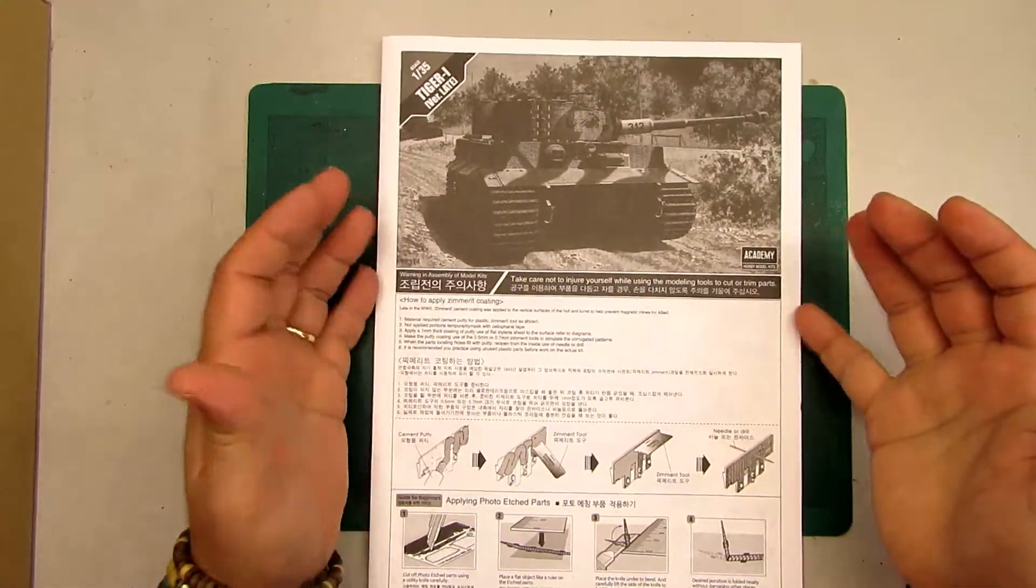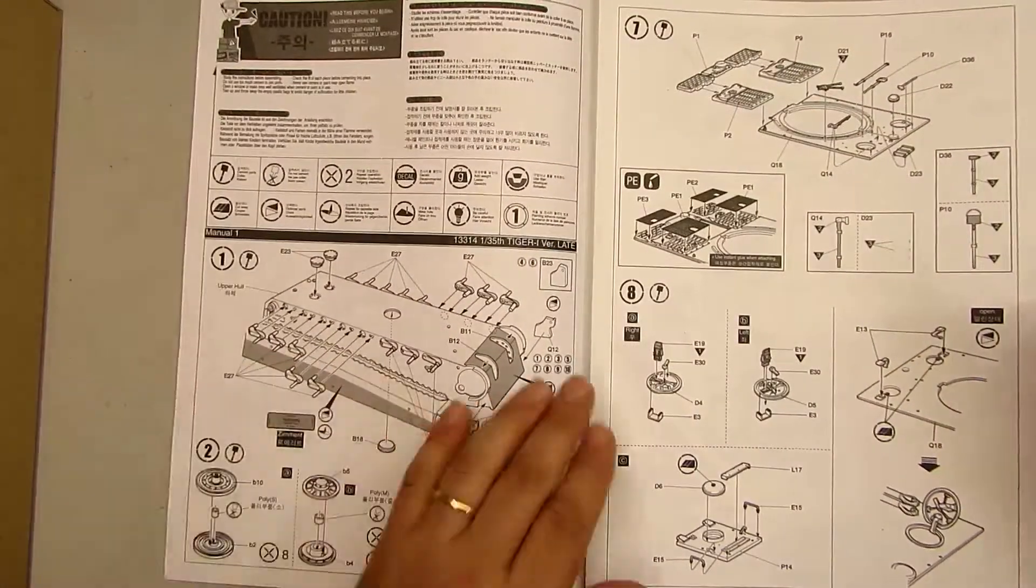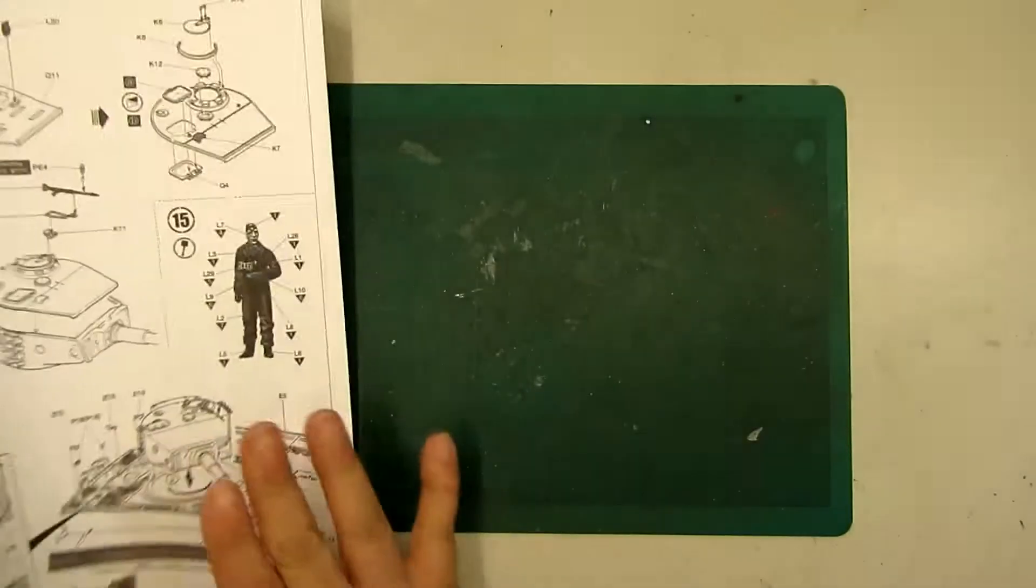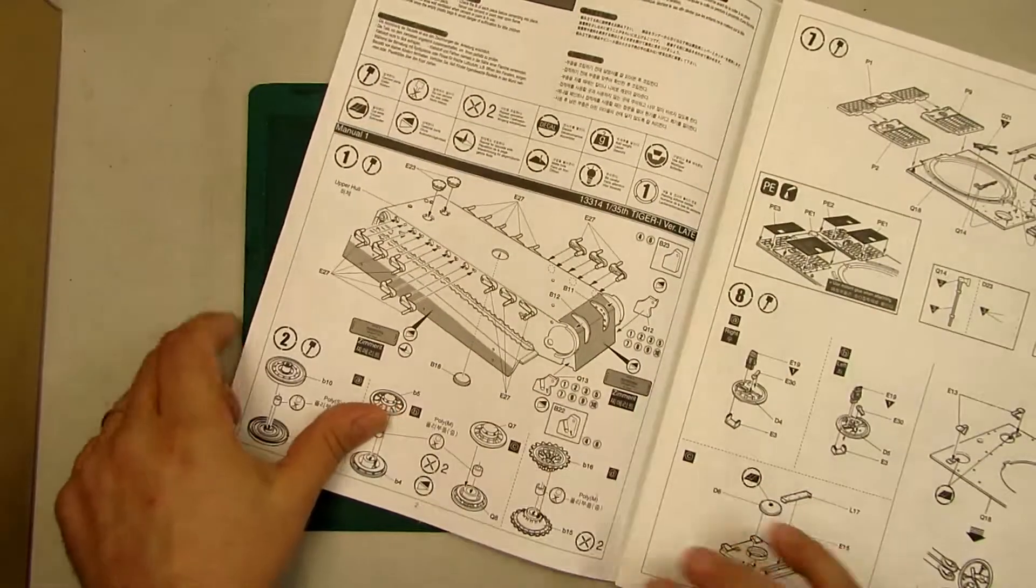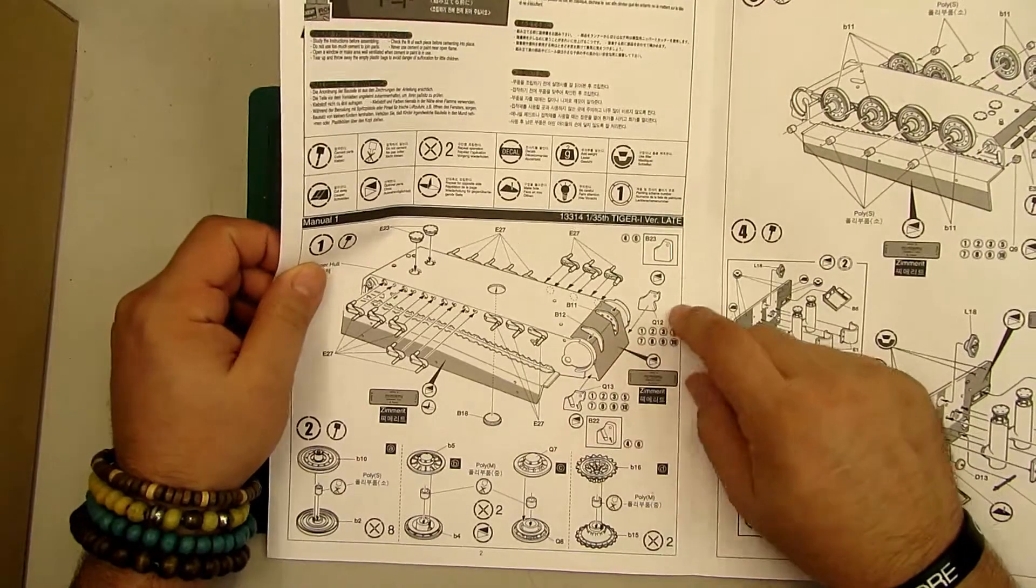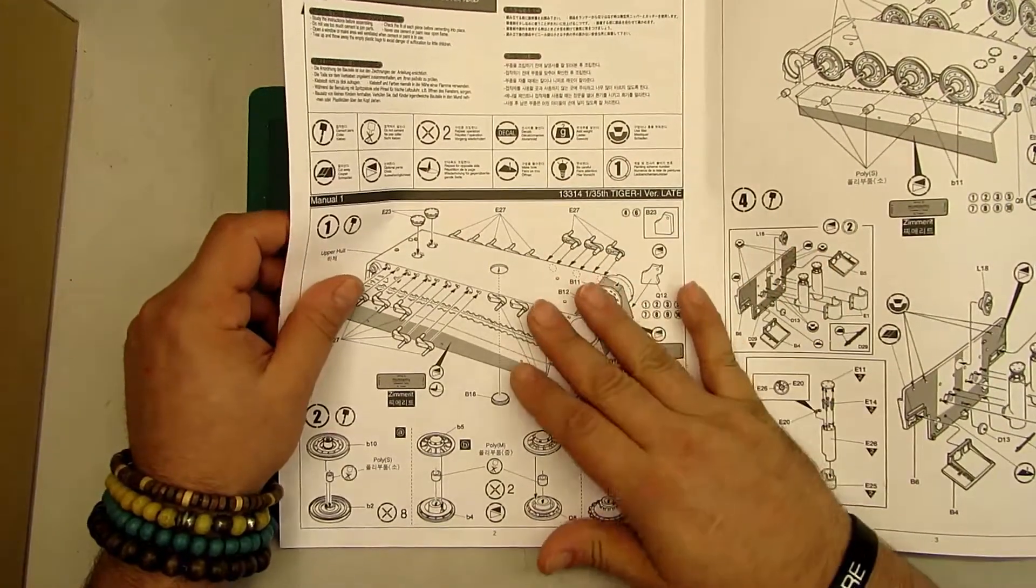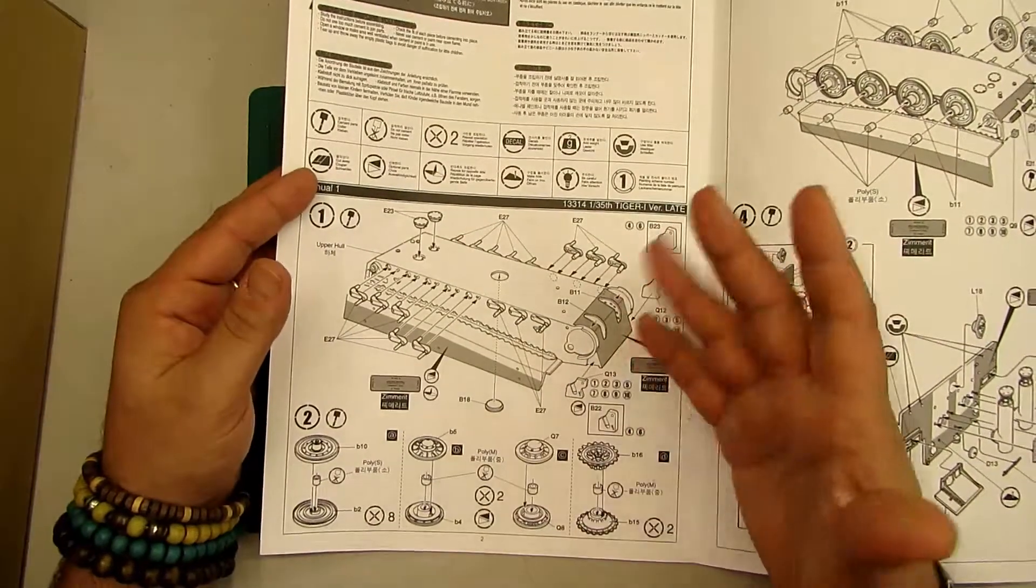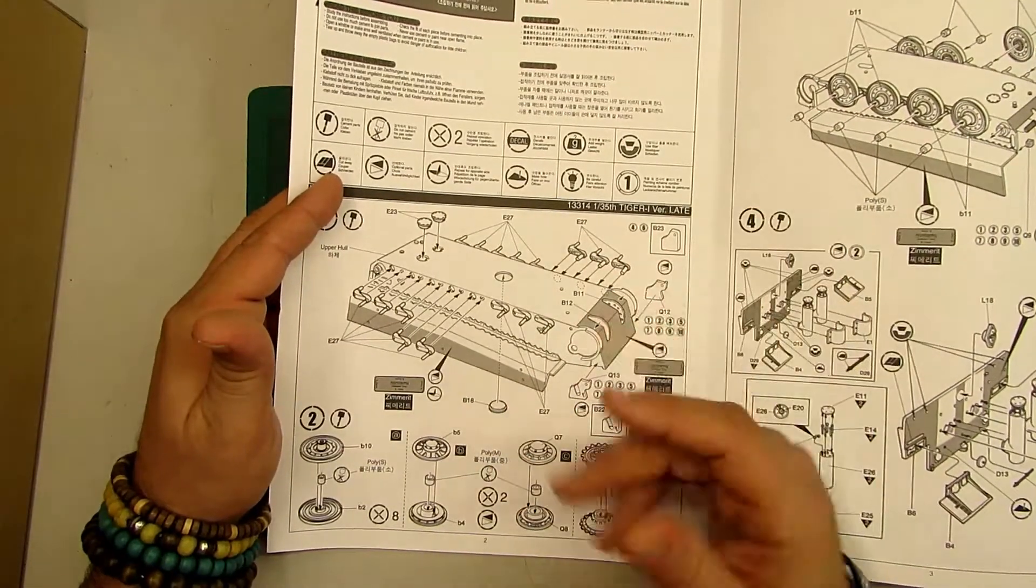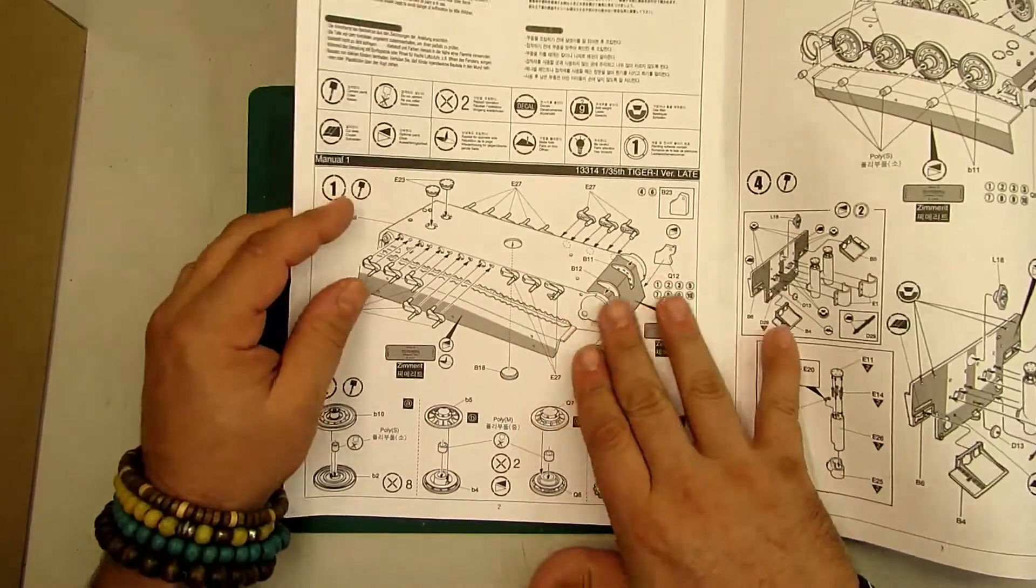We are going to start with the instructions. All these instructions bring a tool for the zimmerit, but I'm going to show you later. So let's see how many steps we have on this tank. It's 16 steps total.